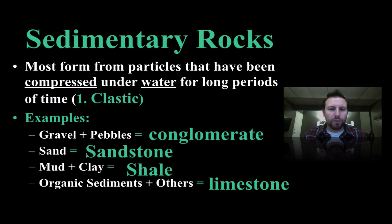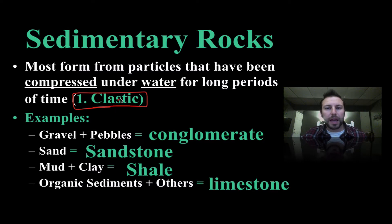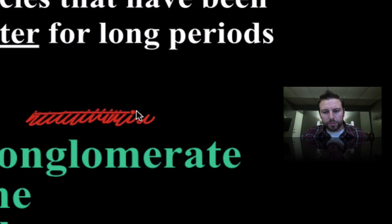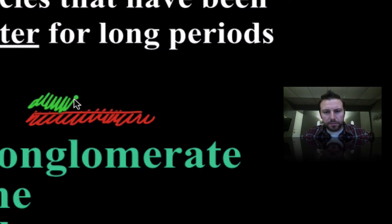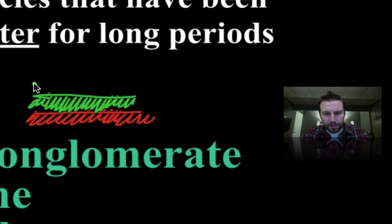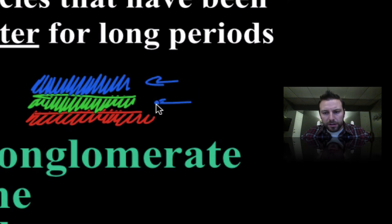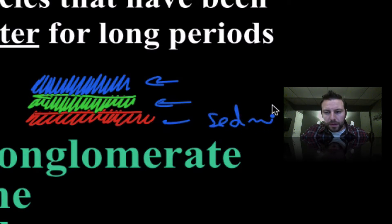Sedimentary rocks for the most part form from particles that have been compressed underwater for long periods of time. These are known as clastic sedimentary rocks. Clay settles in layers along the ocean floor, accumulates, and forms a nice layer. Then more material accumulates on top — silt forms another layer, and possibly another layer accumulates on that — giving us these nice flat layers, each one a different sediment.